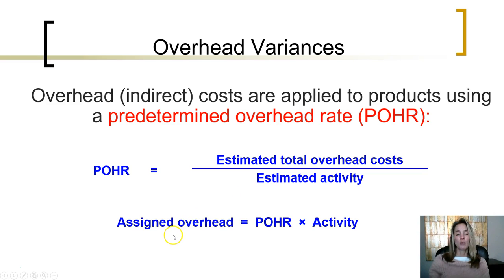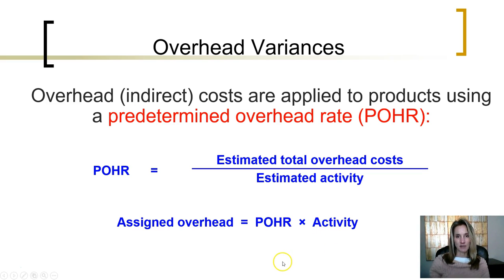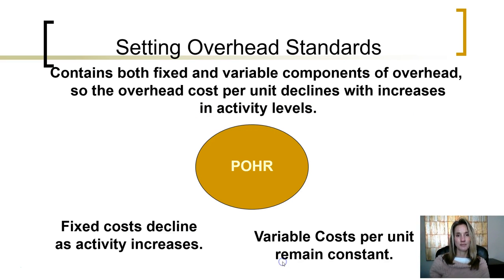When we actually assign the overhead, we use that predetermined overhead rate, which is entirely based on estimates, and multiply by the actual activity. When we set overhead standards, those standards contain both fixed and variable components of overhead.